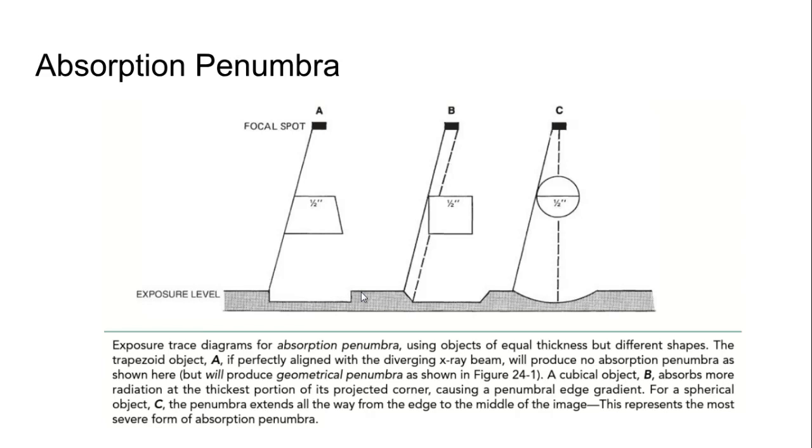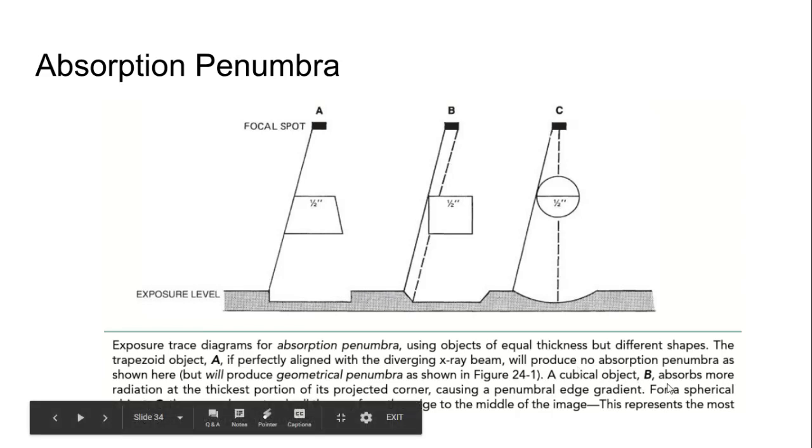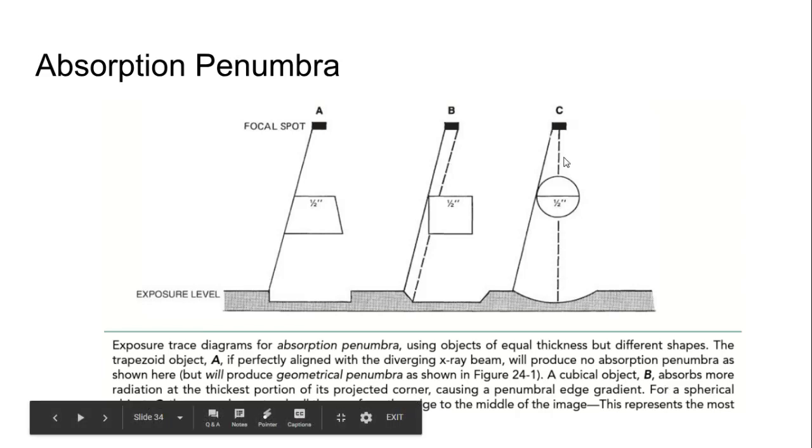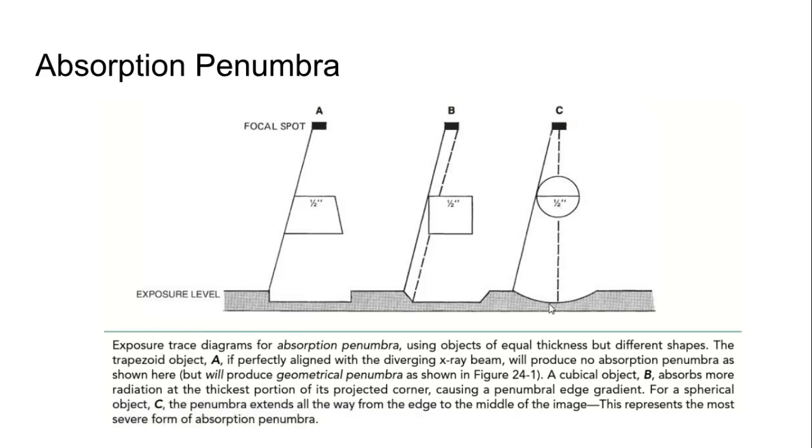And for an extreme example, if you look at C, where you have a spherical object, and if you're measuring that, especially kind of from the center of the object, then according to the trace diagram here, this is a very shallow slope, which actually means that you have the most severe form of absorption penumbra, right? This would be giving you the most distortion.